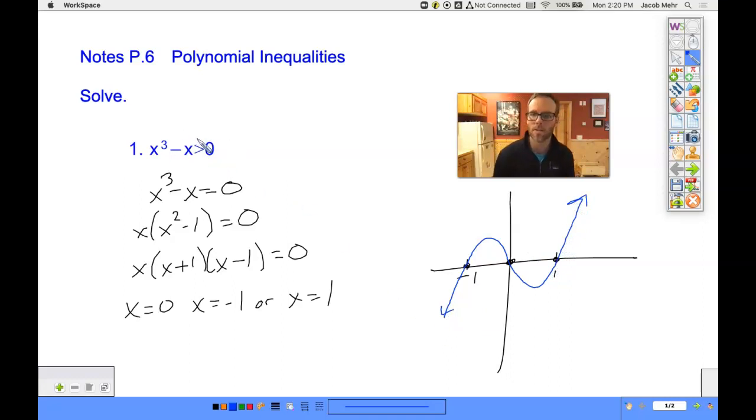So now I ask, where is this greater than zero? That would be from here, not including negative one, exclusive, up to zero, and then from one exclusive over there. That's where it's greater than zero.